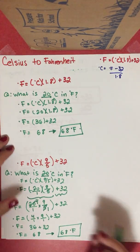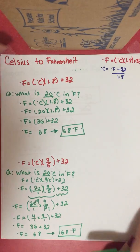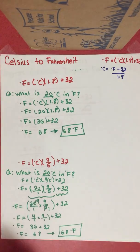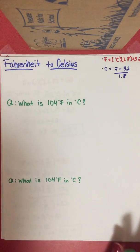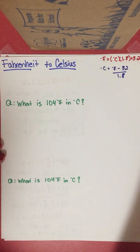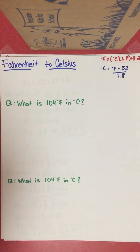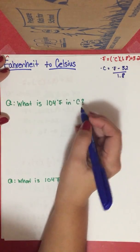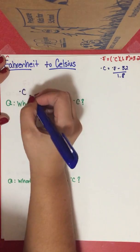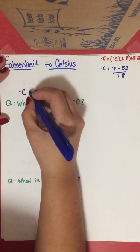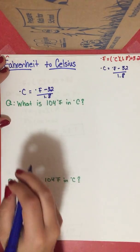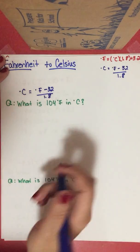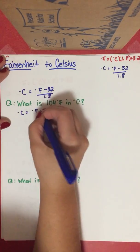Both methods give the same answer — just use whichever you're more comfortable with. Now we're going to go to Fahrenheit to Celsius. Since we're looking for degrees Celsius, degrees Celsius equals degrees Fahrenheit minus 32 over 1.8.